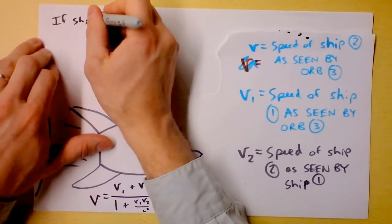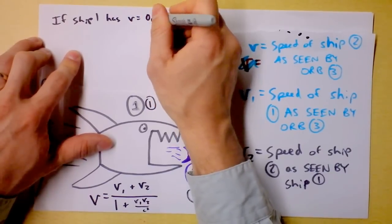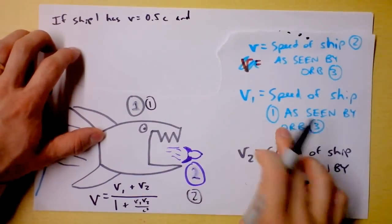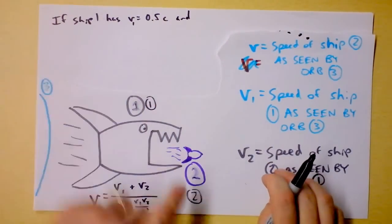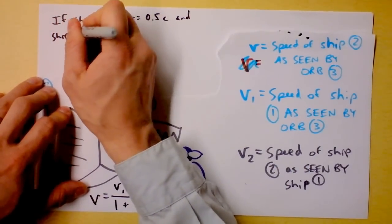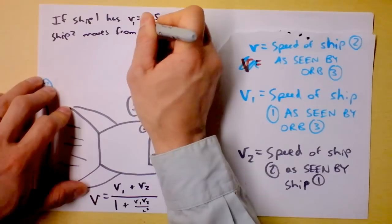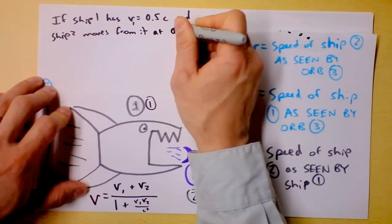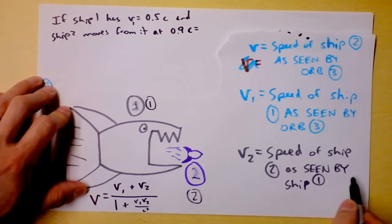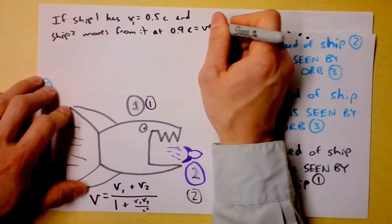If ship 1 has V equals 0.5 times C, and we're going to call that V1, that's the speed as seen by the orb. And ship 2 moves from it at 0.9 C, and I'd have to define that as V2. That's the speed of ship 2 as seen by ship 1.